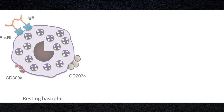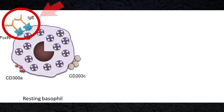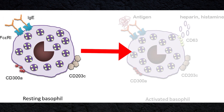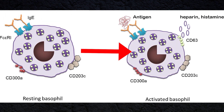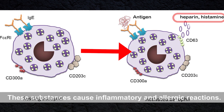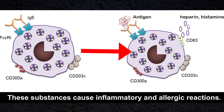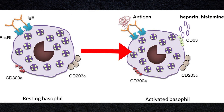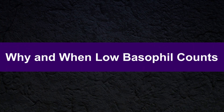Basophils have receptors for immunoglobulins such as IgE antibodies, which are concerned with allergic reactions. When an antigen combines with the antibody, the cell releases heparin or histamine from its granules. These substances cause inflammatory and allergic reactions. Basophils are involved together with mast cells in tissues in these reactions.